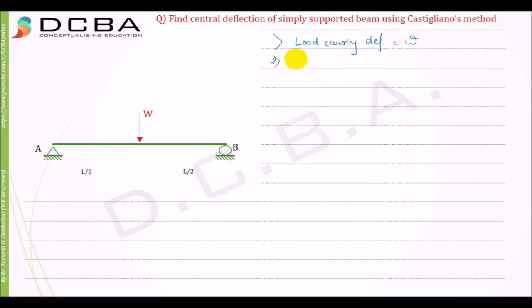Second, we need to put the Castigliano's load wherever we want to find the deflection. So Castigliano's load, imaginary load, is equal to P. So I'll be putting P here on the same point in the downward direction because I want to find the deflection at this point. And as you can see, both are in the downward direction. You can simply just add them, so W plus P.